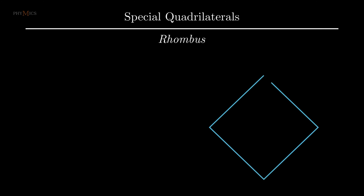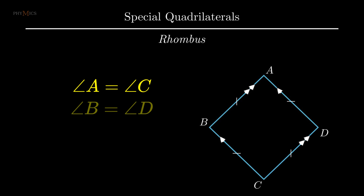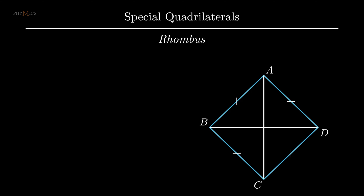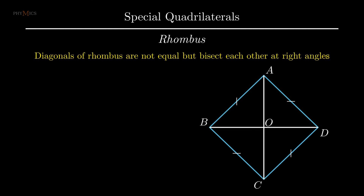Moving to the last case of special quadrilateral known as rhombus. A rhombus is a quadrilateral in which all four sides are equal and pairs of opposite sides are parallel. The opposite vertex angles of a rhombus are equal, that is angle A equals angle C and angle B equals angle D. Diagonals of a rhombus are not equal but bisect each other at right angles.